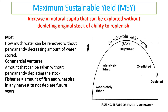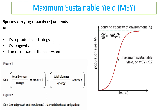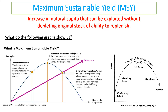One approach is maximum sustainable yield — the idea that you can increase exploitation of a natural resource without depleting the original stock. If you increase your catch and effort to a certain point, your yield will increase, and when it reaches its maximum, that is the maximum sustainable yield. It's how much you can remove without permanently depleting the resource. This links to carrying capacity — the amount an environment can sustain — which relates to a population's reproductive strategy, its longevity, and the resources in the ecosystem. Once you go past the maximum yield, the population starts to collapse, leading to overfishing and eventually extinction.